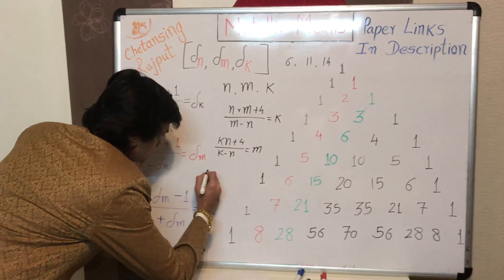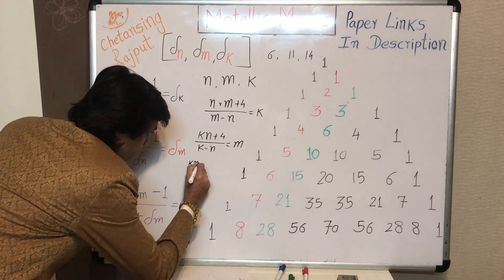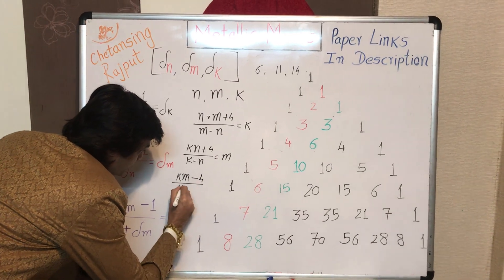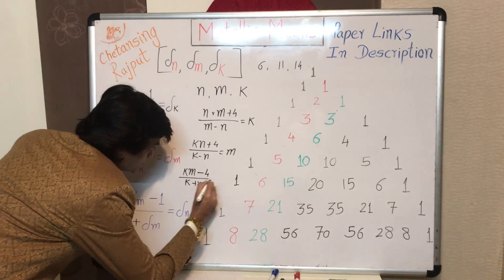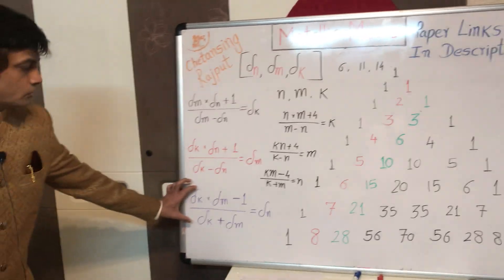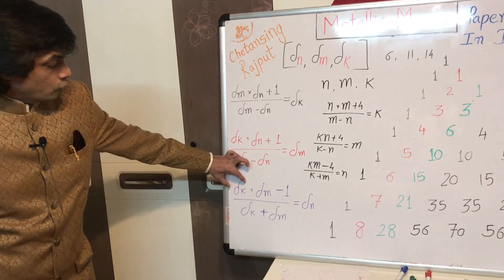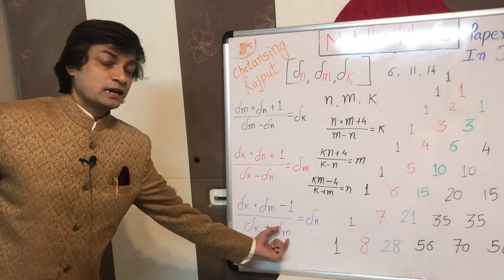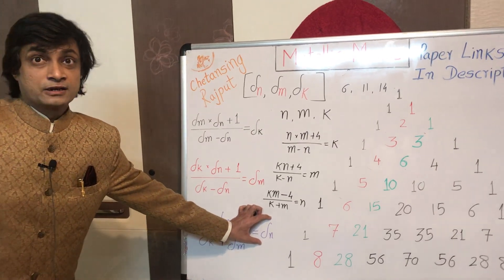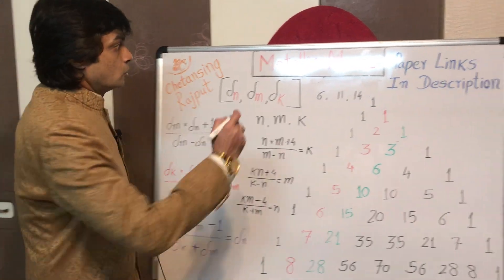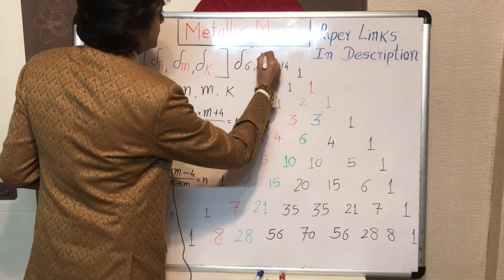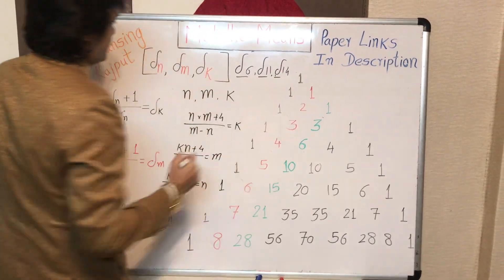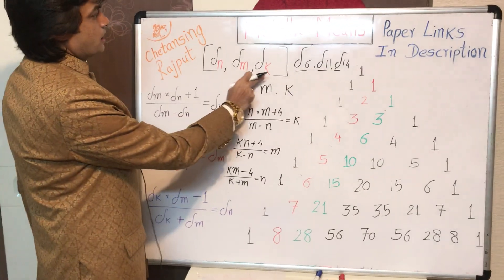If this is true, then this is also true: k times n plus 4 upon k minus n equals m, and hence this formula also holds. The 14th metallic ratio times the 6th metallic ratio plus 1, upon the difference between them, gives the precise value of the 11th metallic ratio. Another relation also holds: k times m minus 4 upon k plus m equals n — so the 14th times 11th metallic ratio minus 1 upon their difference gives the precise value of the 6th metallic ratio. Thus delta 6, delta 11, and delta 14 form a triad — delta n, delta m, and delta k.